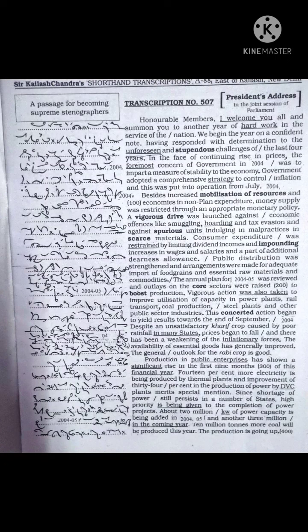Production in public enterprises has shown a significant rise in the first nine months of this financial year. 14 percent more electricity is being produced by thermal plants and improvement of 34 percent in the production of power by DVC plants merits special mention. Since shortage of power still persists in a number of states, high priority is being given to the completion of power projects.